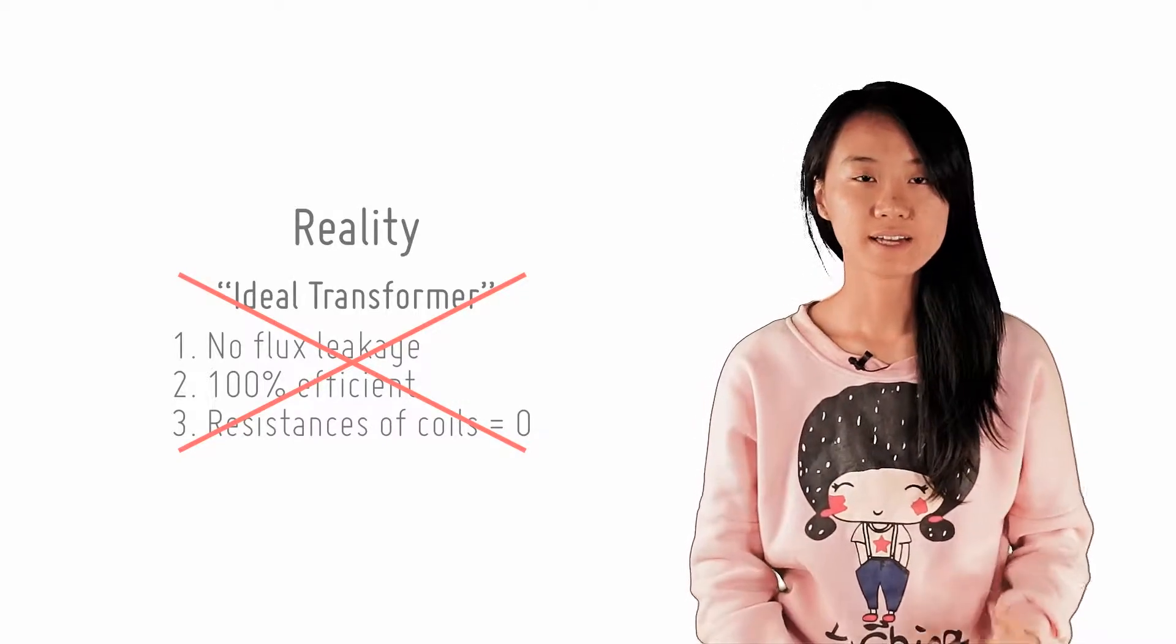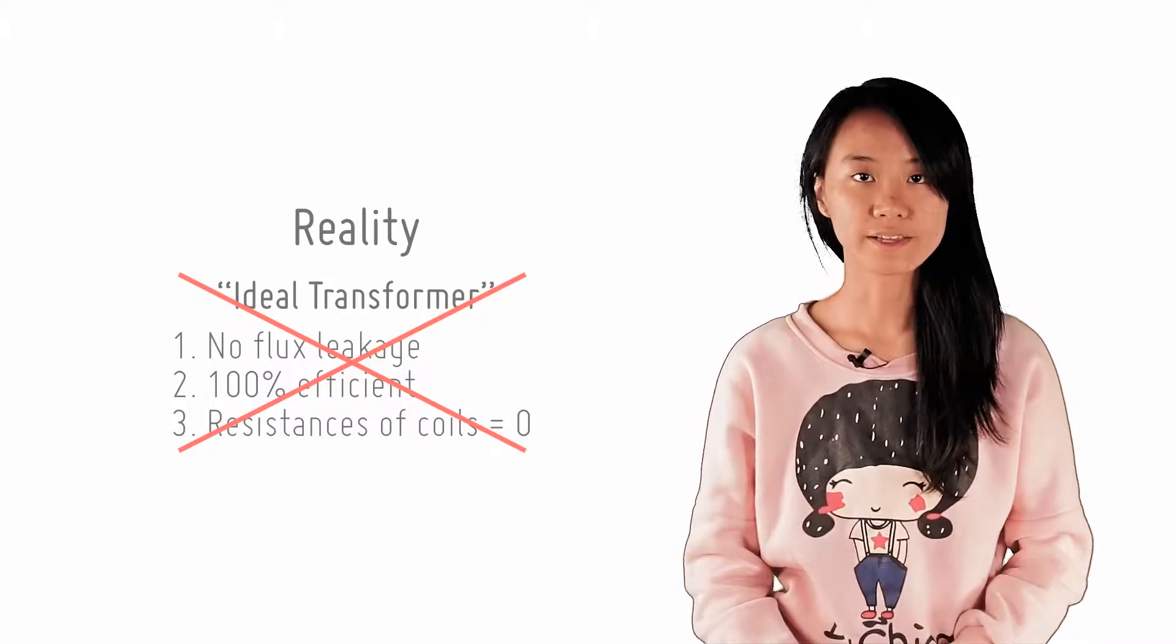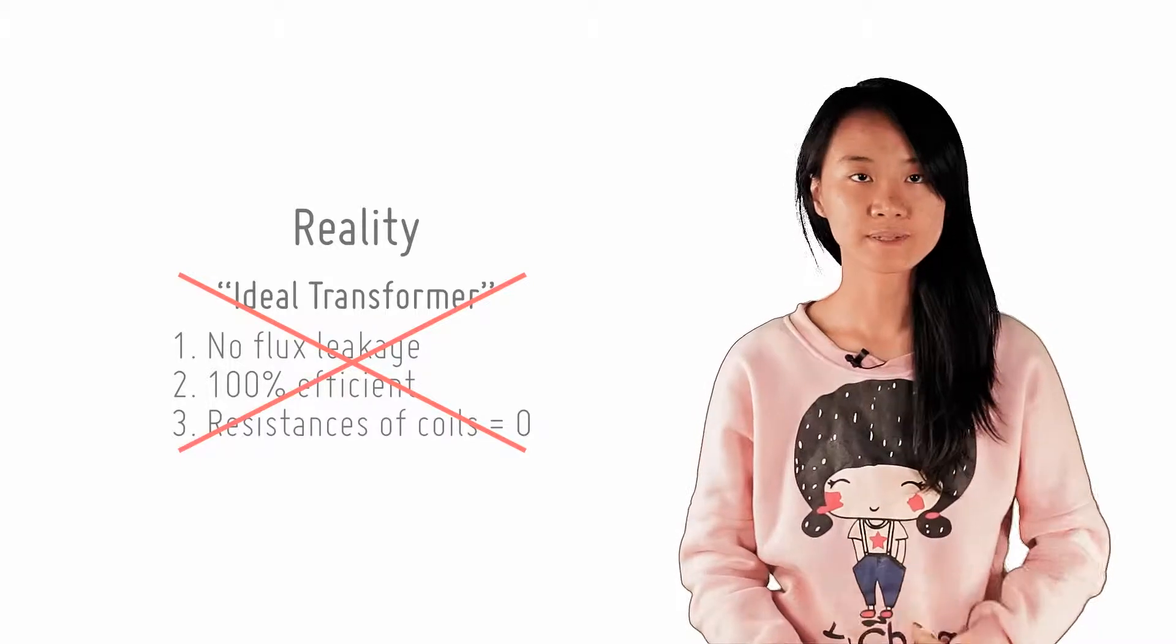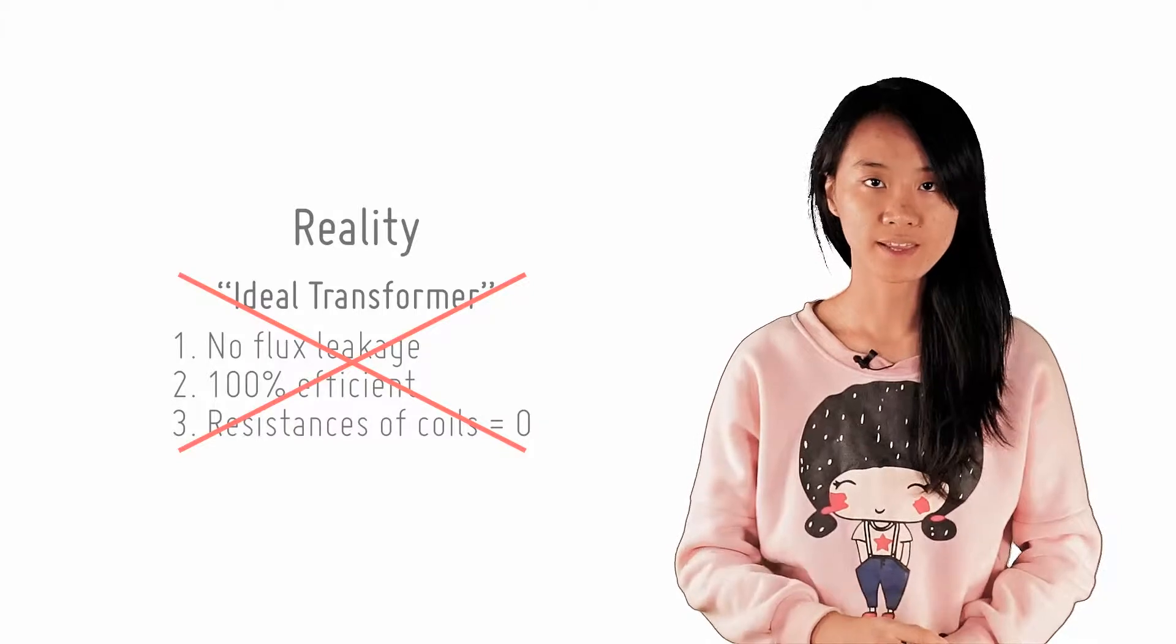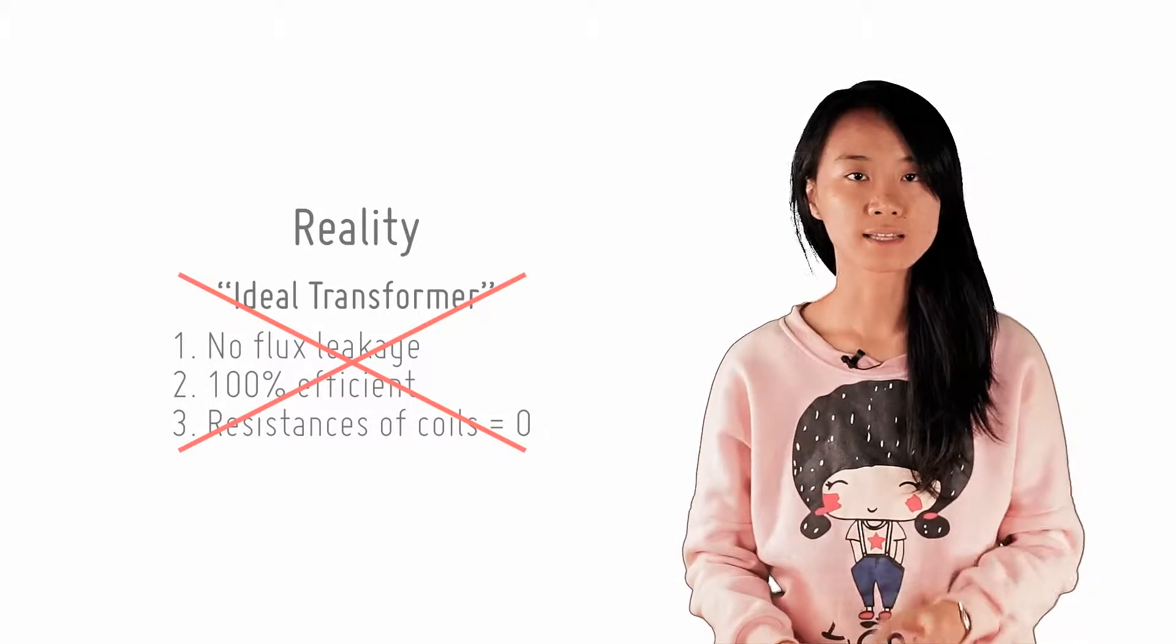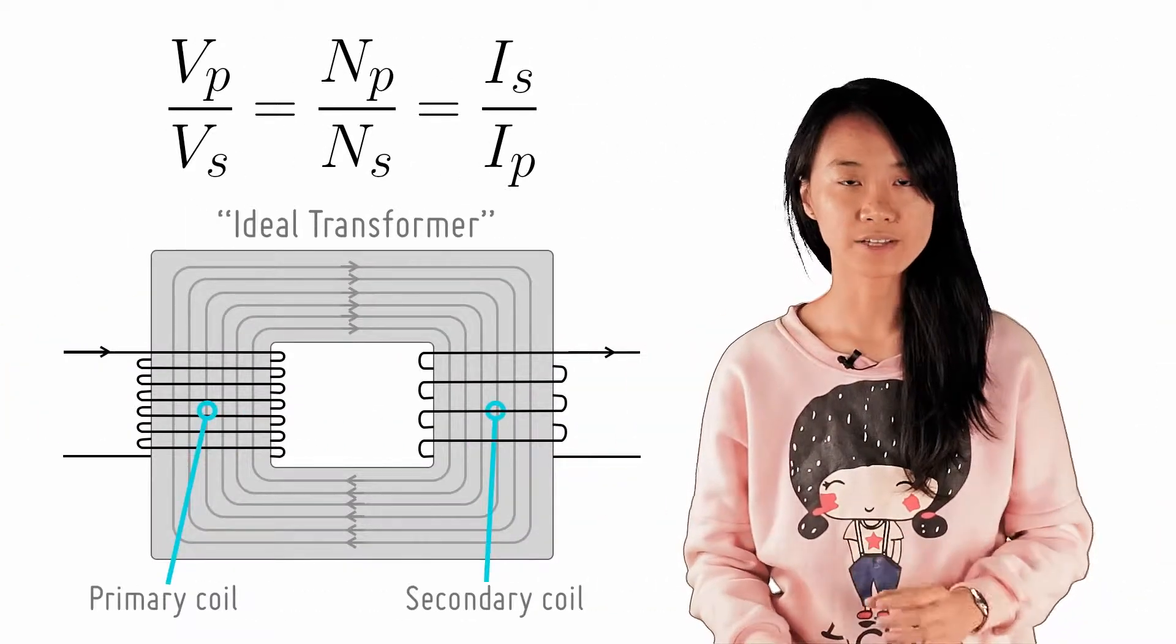In the previous checkpoint, you learned that a real transformer is not ideal, and that it is not 100% efficient. This was a limitation to what you learned in the checkpoint before that, where you learned how to calculate the output voltage and current for an ideal transformer.